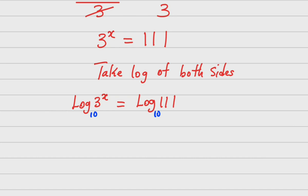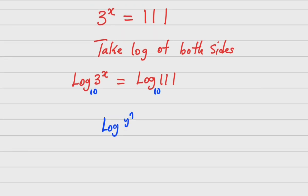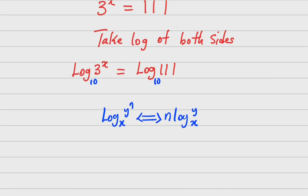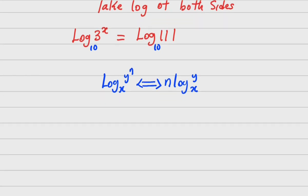Now from one of the laws of logarithms, we know that if you have log of y raised to the power n, base x, then it can be written as n·log of y, base x. This is actually vice versa — you can move from left to right or right to left. Having this knowledge, we will now have x·log 3 equals log 111.